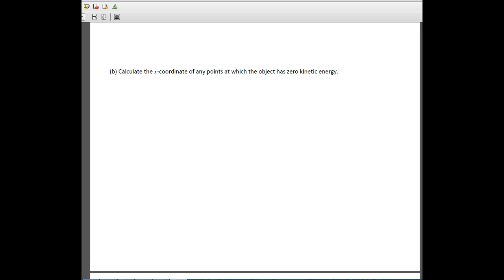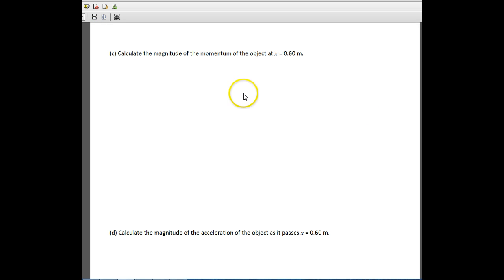For letter C, the next thing that they want us to do here is calculate the magnitude of the momentum of the object at x is equal to 0.6 meters. Now, this really isn't bad. We haven't talked a lot about momentum yet, but we know momentum is just simply mass times velocity. So momentum here is equal to mass times velocity. So that kind of gives us a hint that we need to be solving for velocity.